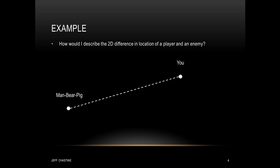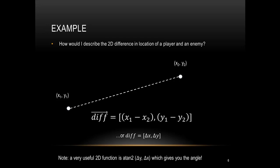Let's see an example of where we might use vectors. Imagine we create a 2D game that has a player and any number of enemies. How would you describe the relationship between the player and the enemy? Both the player and the enemy have xy positions, and we can describe the difference in their positions in two parts: the difference in x (delta x) and the difference in y (delta y). It's also good to remember that most math libraries have a function called atan2, and if you pass it delta x and delta y, it will return the angle between those two points.